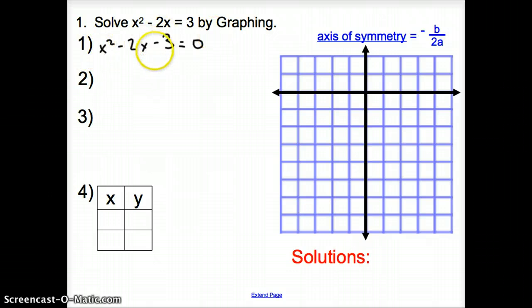So we have x squared minus 2x minus 3 equals 0. So now we have it in standard form. Well, once we put it in standard form, it's the same exact thing that we have been doing the past two days on graphing a quadratic function. So let's go ahead and graph this.